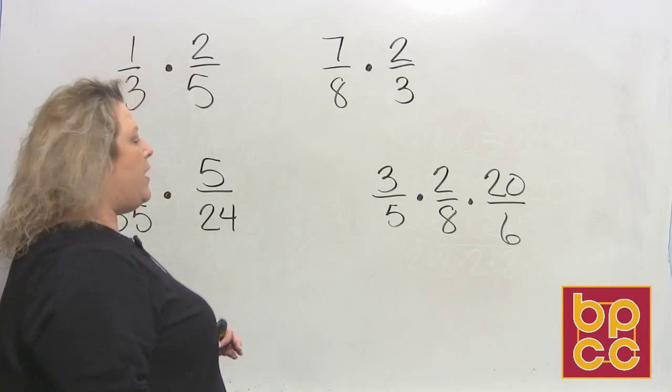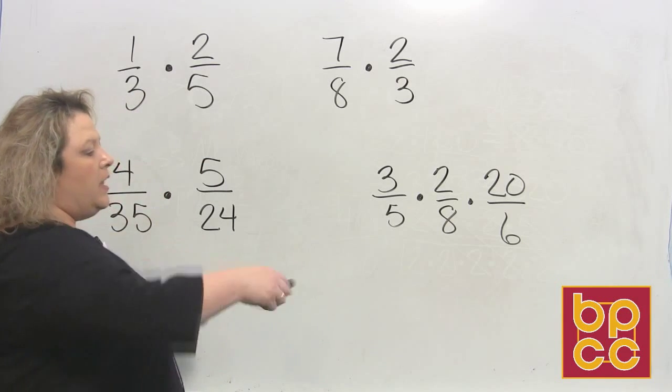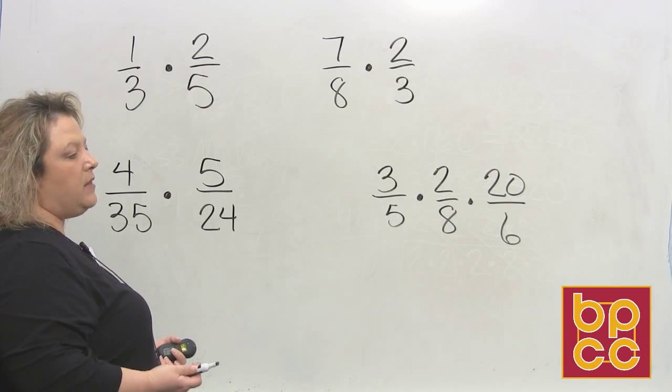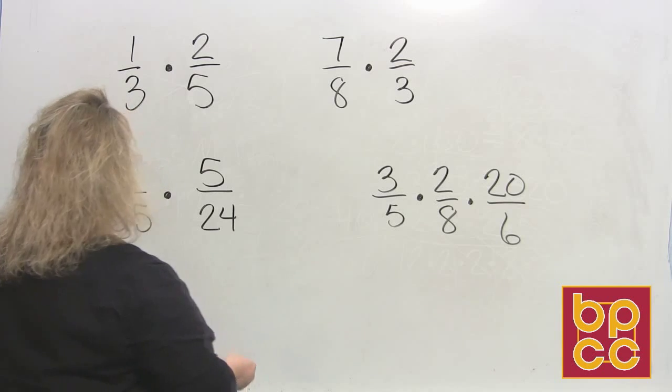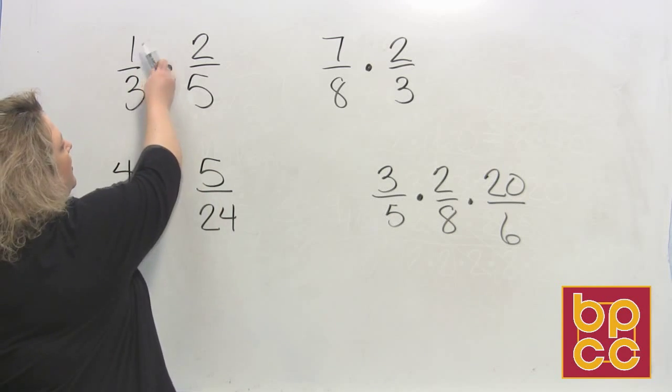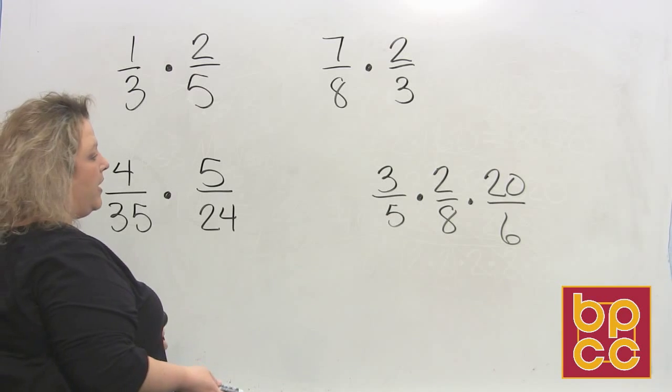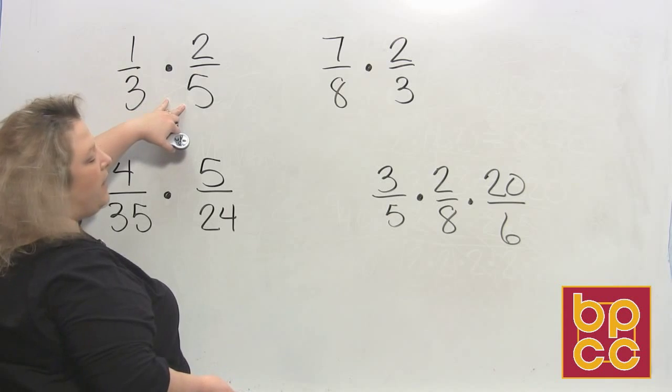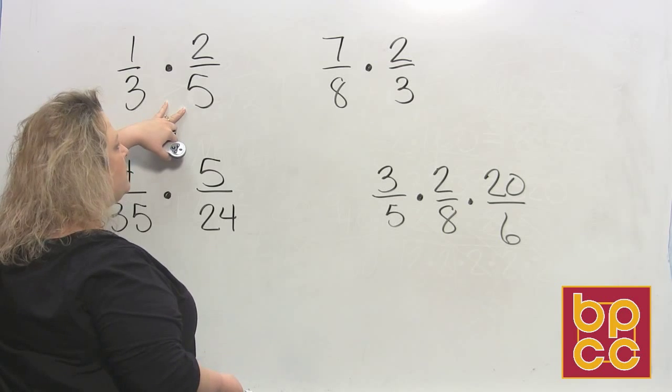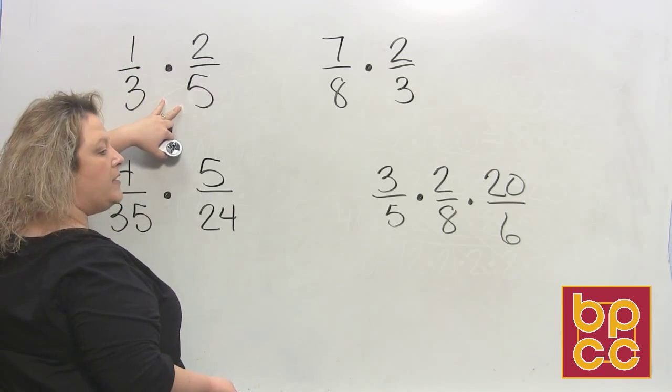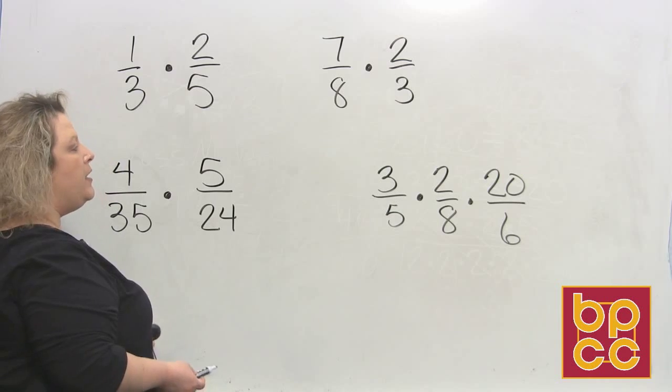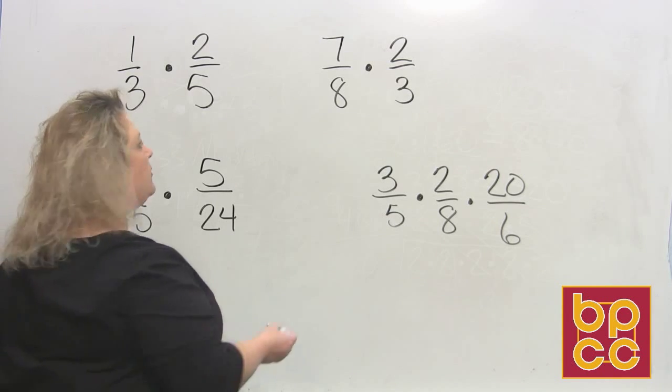If you look at the first set of fractions, I have one third times two fifths. You ask yourself, are they in lowest terms? Yes they are. When I talk about reducing fractions, remember you reduce—some people say you cross multiply when you try to see if one and five can be reduced, but it's not multiplying, you're dividing. So you want to say, do one and five have anything in common? If they have nothing in common, obviously you can't reduce that part of your fraction. Two and three, they have nothing in common.